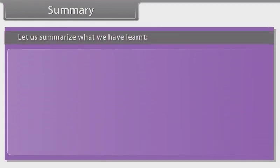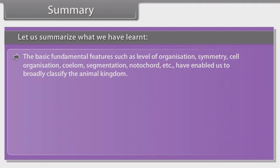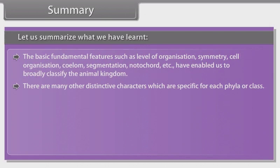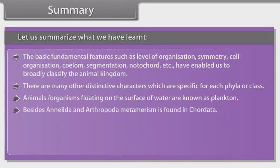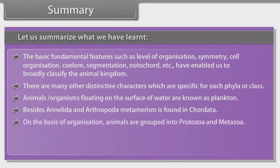Summary: The basic fundamental features such as level of organization, symmetry, cell organization, coelom, segmentation, notochord, etc., have enabled us to broadly classify the animal kingdom. There are many other distinctive characters specific to each phylum or class. Animals floating on the surface of water are known as plankton. Besides Annelida and Arthropoda, metamerism is found in Chordata. On the basis of organization, animals are grouped into Protozoa and Metazoa. Animals having a well-marked digestive cavity are included under Enterozoa.